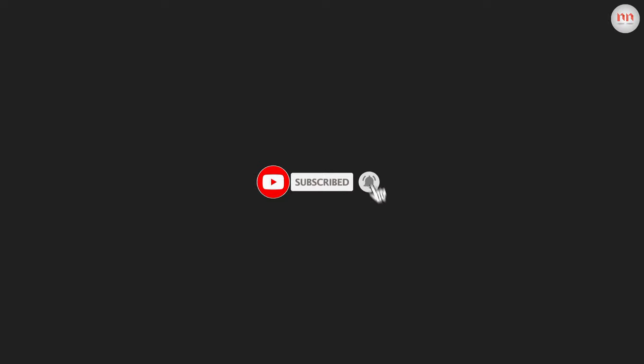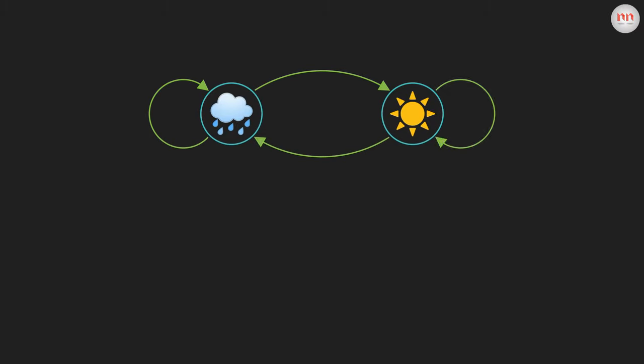To begin our journey, we need a hidden Markov model. Let's have a simple HMM with two hidden states: rainy and sunny. Green arrows represent the state transitions. The two states represent the weather on a particular day in a hypothetical town. And as the observed variable, we have our friend Jack's mood who lives in that town. He can have two moods, sad or happy. Jack's mood depends on the weather, and the relationship is shown by these red arrows.